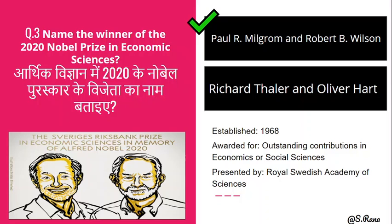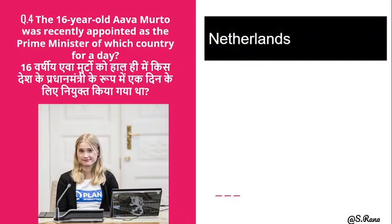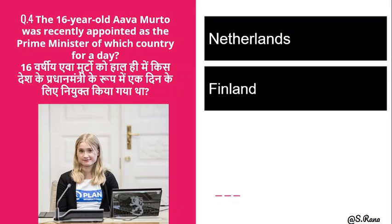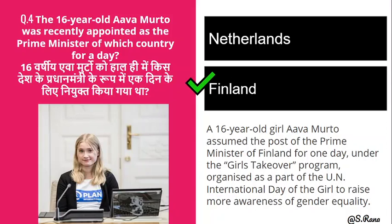Next question: 16-year-old Ava Murto was recently appointed as the Prime Minister of which country for a day? A similar case was also found in India, where a girl participated in a competition linked to the British High Commissioner in India. The options are Netherlands or Finland. The correct answer is Finland — Ava Murto was made Prime Minister of Finland for a day.